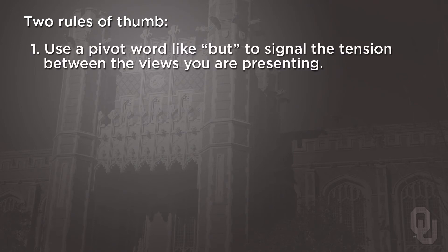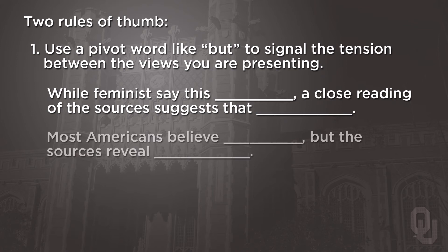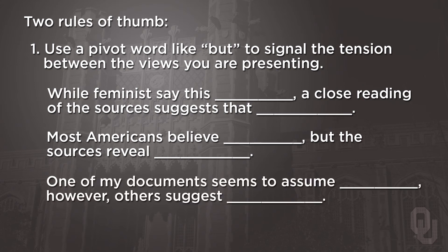Now there are many ways to create this kind of tension before your thesis, but there are two rules of thumb for making this move effectively. First, use a pivot word like 'but' to signal the tension between the views you are presenting. For Zagari that pivot word was 'while': 'While feminists say this, a close reading of the sources suggests that.' Here are a few other examples of typical 'but moves': 'Most Americans believe this, but the sources reveal that.' Or: 'One of my documents seems to assume this; however, others suggest something else.'